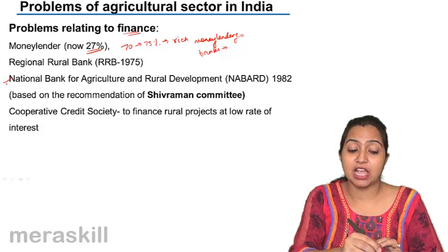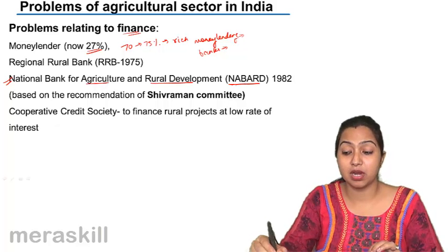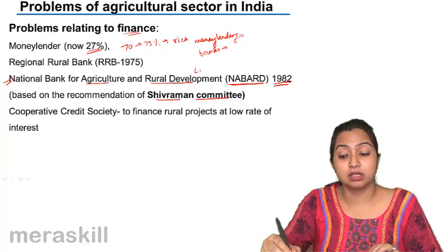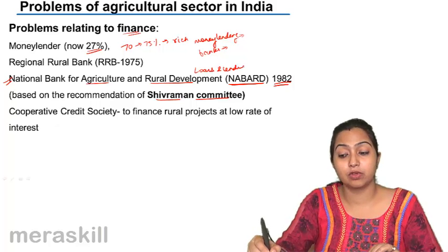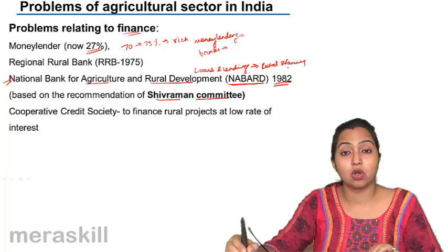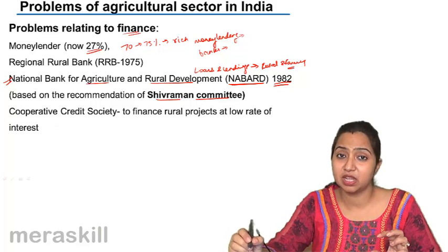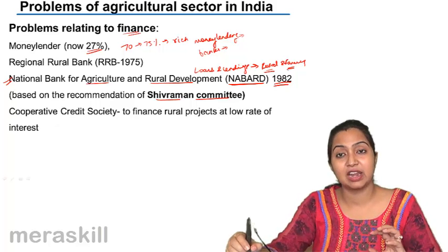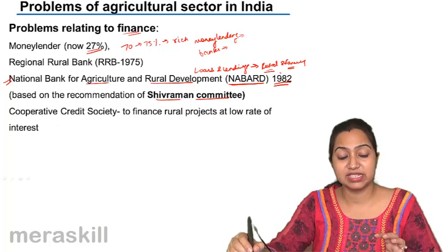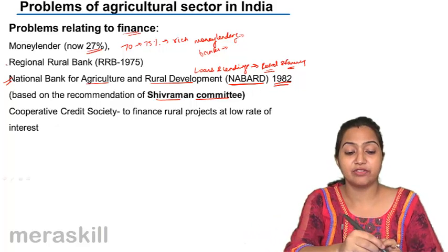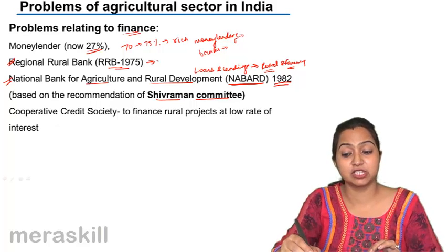Banks have been set up, especially NABARD — National Bank for Agriculture and Rural Development — which was set up in 1982 based on the recommendation of the Shivaraman Committee to look after loans and lending in rural areas and the farming sector. Rural and farming are not synonymous; there are many other industries in the rural sector. NABARD is an apex bank — like what RBI is to commercial banks, NABARD is to rural banks. Regional rural banks were also set up to provide finances to rural people.